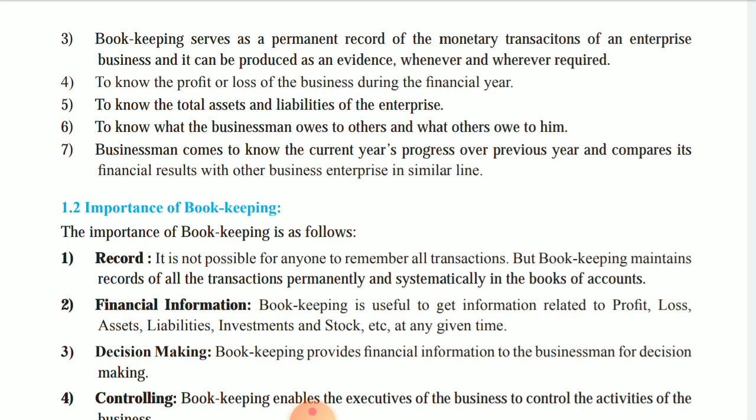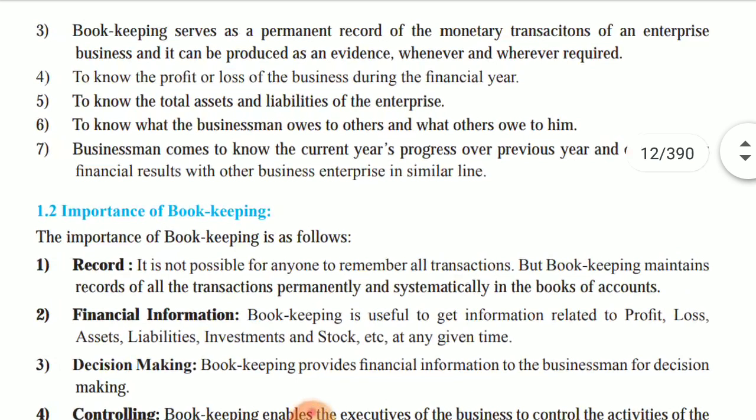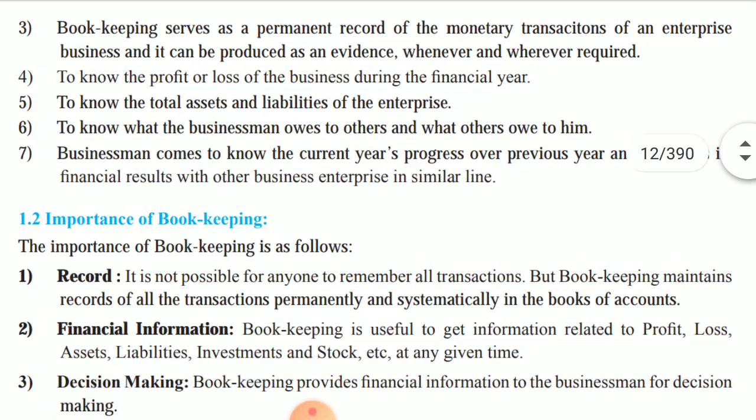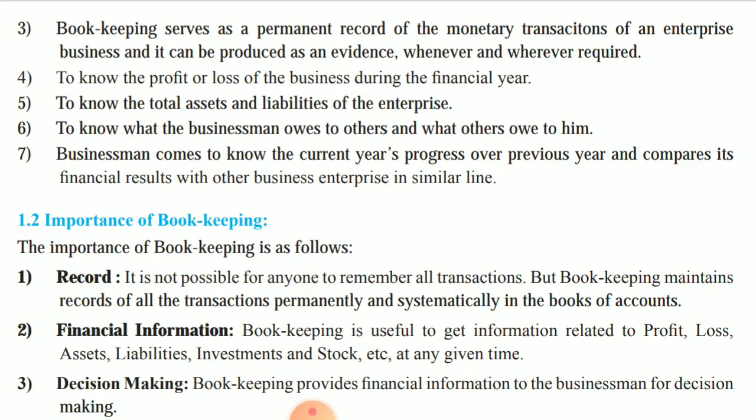It can be produced as evidence. If we have our business profits during the year, we can record and maintain our business. We can tell at year end how much profit or how much loss we have. The next point says: to know the total assets and liabilities of the enterprise — what kind of assets we have, what kind of liabilities we have.